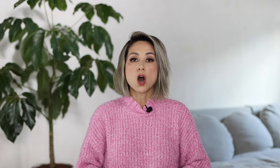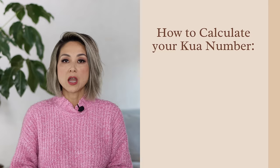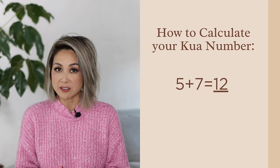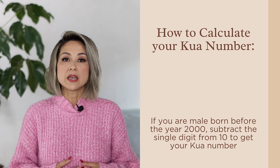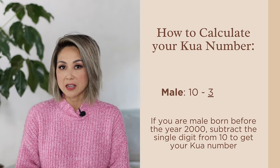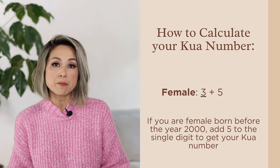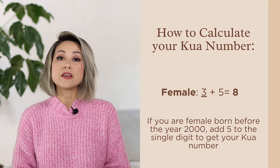So here's how we calculate our personal kua number. All you need is the year of birth and your gender. You need to take the last two numbers of the year that you're born and then reduce them down to a single number. For example, if you were born in 1957, you would take the last two numbers which is 5 and 7, add them together — 5 plus 7 equals 12 — and then further reduce this down to a single digit: 1 plus 2 equals 3. Then depending on your gender, you follow the next instructions. If you are male, you take that single digit and subtract it from 10. So in this case, 3 minus 10 equals 7 — if you were born in 1957 and you are male, your kua number would be 7. If you are female and born in 1957, you would take the number 3 and add 5 to it: 3 plus 5 equals 8. So if you are a female born in 1957, your kua number would be 8.